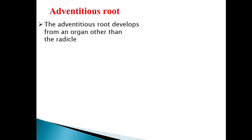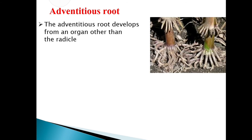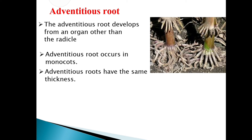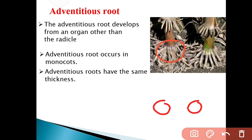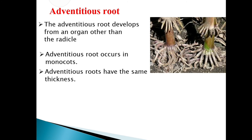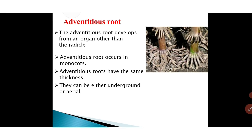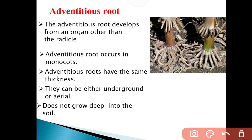The adventitious root develops from an organ other than the radicle. Adventitious roots occur in monocots. They have the same thickness, as you can see in the picture. They can be either underground or aerial. The last point is that adventitious roots do not grow deep into the soil — you can see in the image that the roots are above the soil, not deep in the soil.